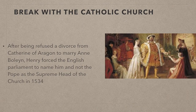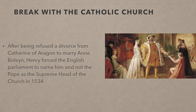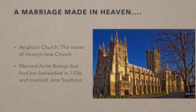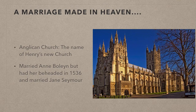So when the Pope refused to annul Henry's marriage to Catherine of Aragon — after he had become infatuated with the young Anne Boleyn — he forced the English Parliament to name him, and not the Pope, as the Supreme Head of the Church in England in 1534. His first act in setting up this new Anglican Church was to end his marriage with Catherine and marry Anne Boleyn. Well, not really happily ever after — he had her beheaded in 1536, two years later, so he could marry his next wife, Jane Seymour.